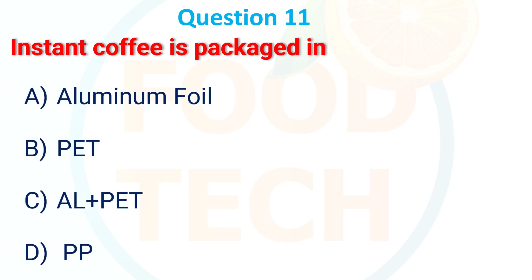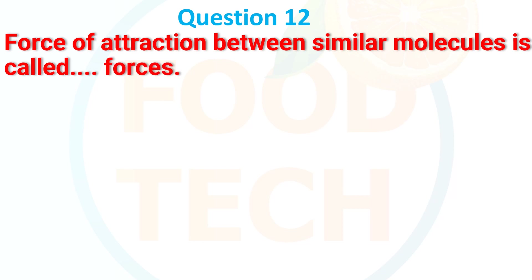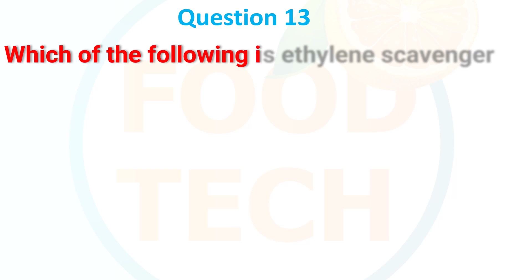Instant coffee is packaged in: a) aluminum foil, b) fat, c) Al plus fat, d) TP. The answer is c) Al plus fat. Force of attraction between similar molecules is called dash force: a) cohesive, b) adhesive, c) van der Waals, d) shear. The answer is cohesive.